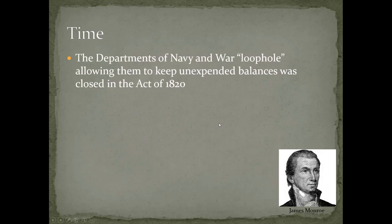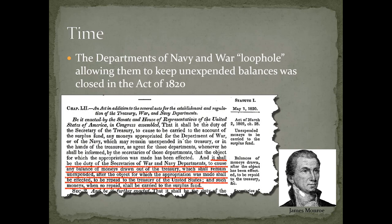Back to time: the Department of Navy and War loophole allowing them to keep their unexpended balances was closed in the Act of 1820 during the term of James Monroe. The language stated it shall be the duty of the Secretaries of War and Navy to cause any balance of monies drawn out of the Treasury which shall remain unexpended after the object for which the appropriation was made shall be effected, to be repaid to the Treasury of the United States, and such monies when so repaid shall be carried to the surplus fund.